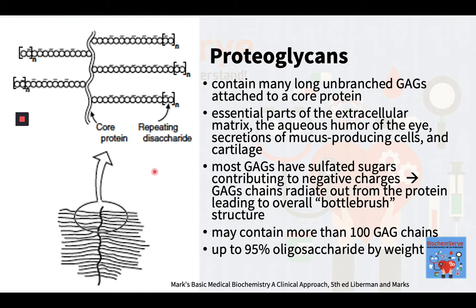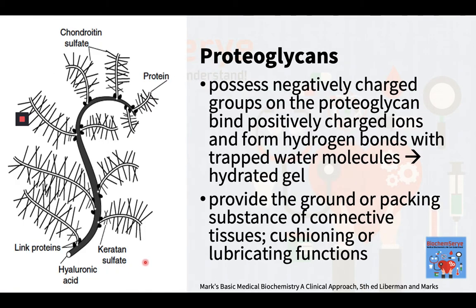The GAGs are composed of repeating units of disaccharides. One sugar of the disaccharide is either N-acetylglucosamine or N-acetylgalactosamine, and the second is usually acidic — either glucuronic acid or iduronic acid. These sugars are modified by the addition of sulfate groups. A proteoglycan may contain more than 100 glycosaminoglycan chains and consist of up to 95% oligosaccharide by weight. The large number of negative charges causes the glycosaminoglycan chains to radiate out from the protein, so that the overall structure resembles a bottle brush. The negatively charged carboxylate and sulfate groups bind positively charged ions and form hydrogen bonds with trapped water molecules, thereby creating a hydrated gel.